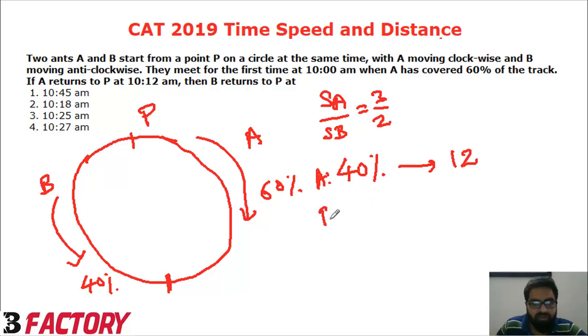B has to cover 60% of distance. First of all, what we have to see is A would have taken this much amount of time to cover 60% distance.